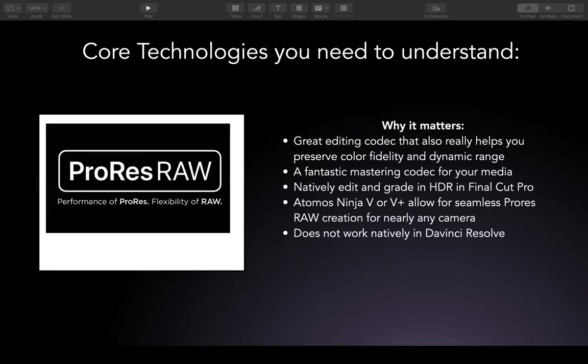ProRes RAW is a great editing codec that preserves color fidelity and has all the advantages of things like RED RAW — flexible in color correction but also designed to be an editing codec that gives you a much higher dynamic range. It is especially useful if you're interested in mastering in HDR, which is progressively becoming more needed. Specifically, if you're looking to record ProRes RAW, you'll want to look at the Atomos Ninja V or V+, which allows you to record ProRes RAW from almost any camera.